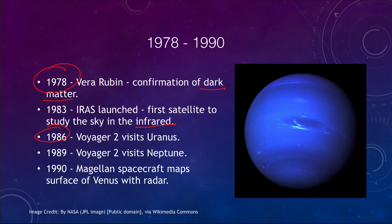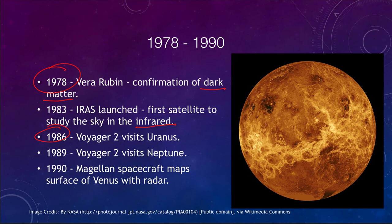Finally in this section, in 1990 the Magellan spacecraft mapped the surface of Venus in great detail for the first time. Since visible light cannot penetrate Venus's clouds, Magellan used radar to map the surface, allowing us to understand what the surface of Venus is actually like.